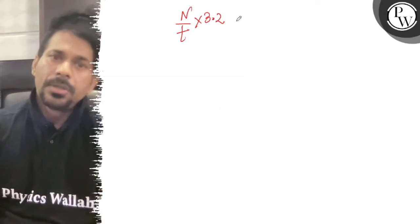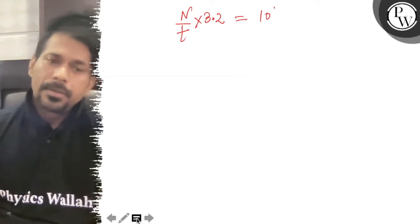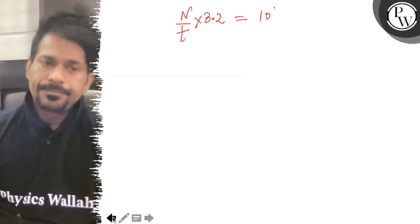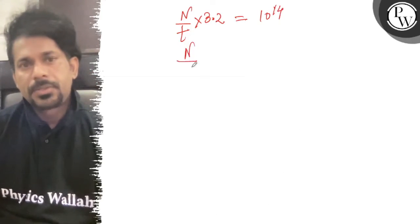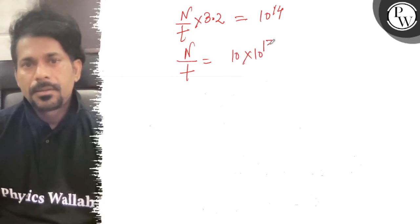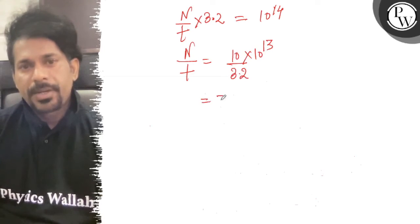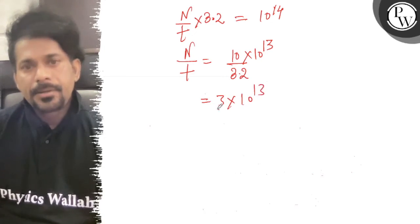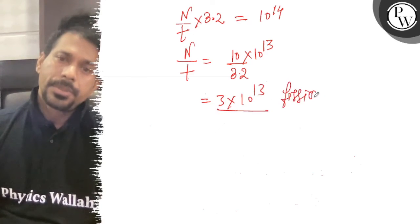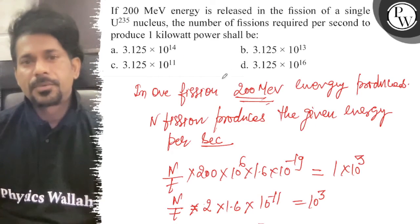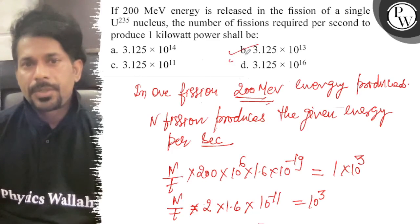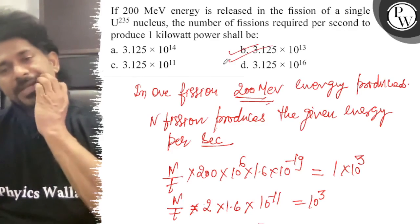So, n/t into 3.2 is equal to 10 to the power 3 W. So, n/t — the number of fissions per second — equals 10 to the power 3 divided by 3.2, since the power required is 1 kW, which is 10 to the power 3 W.